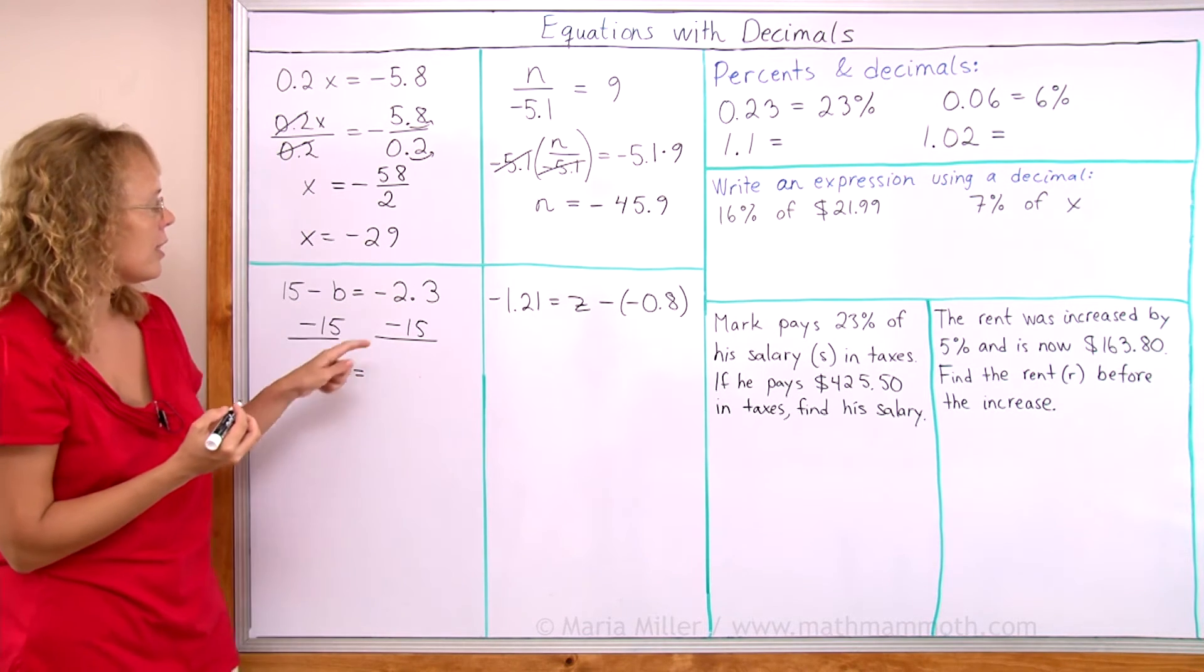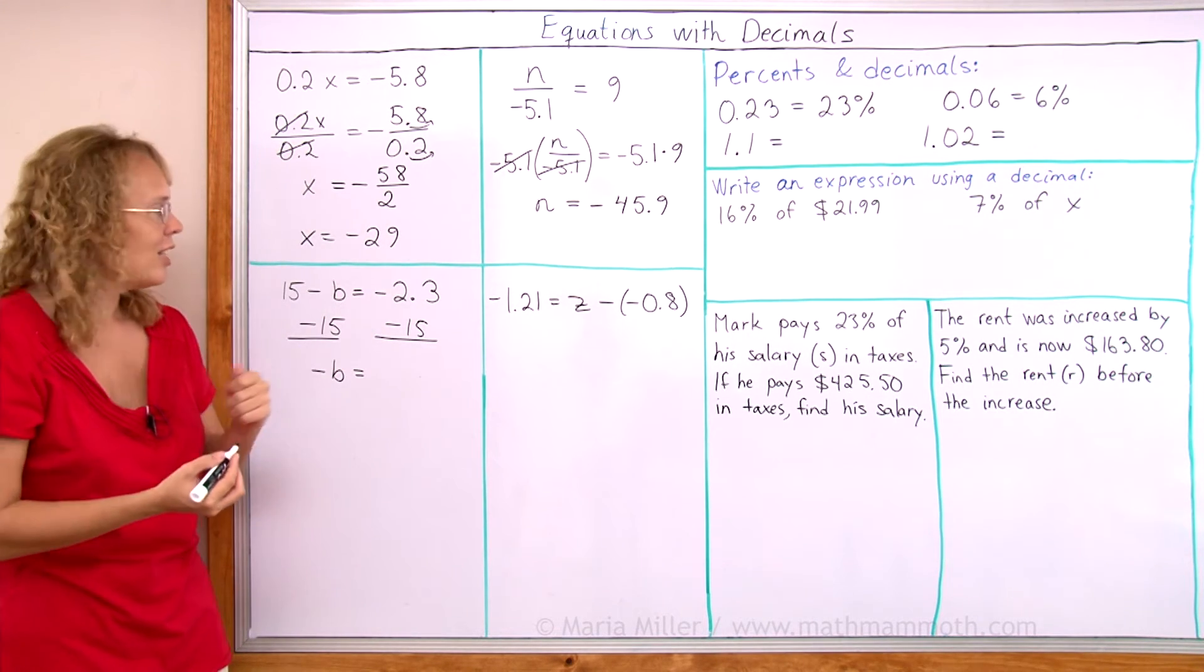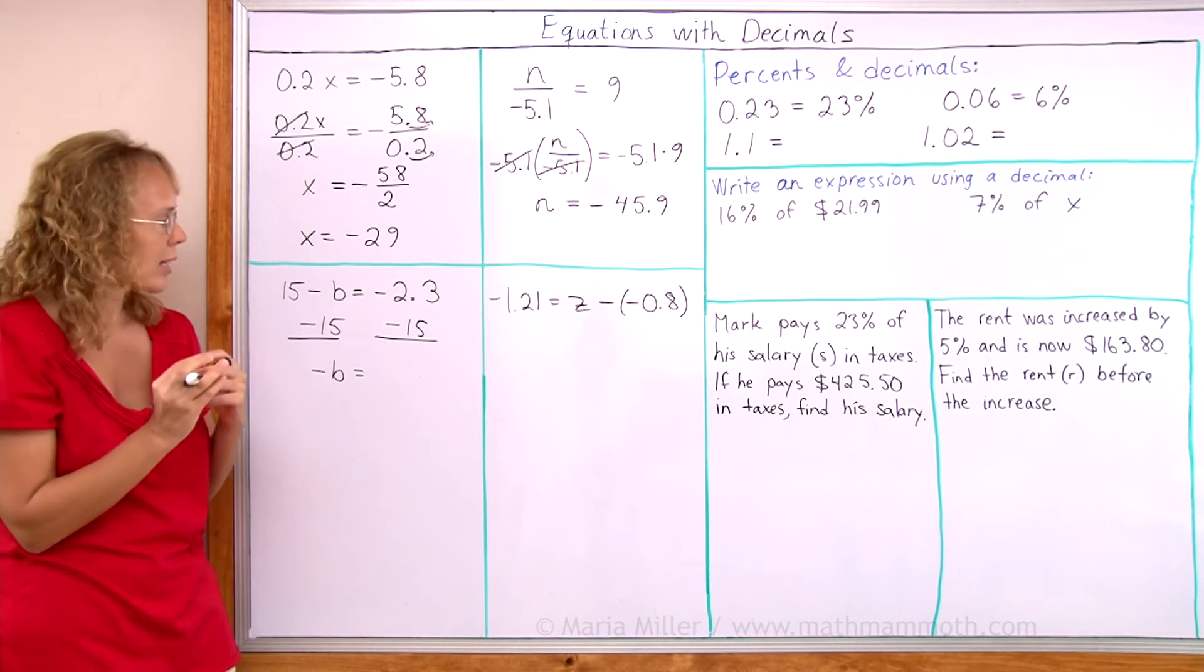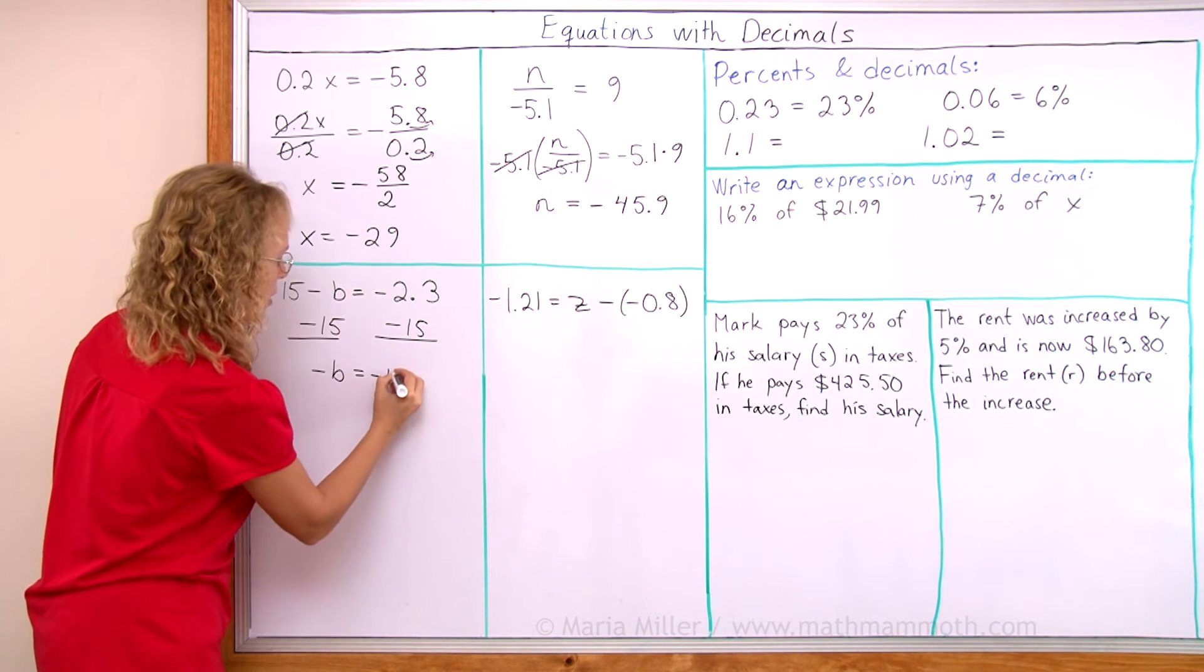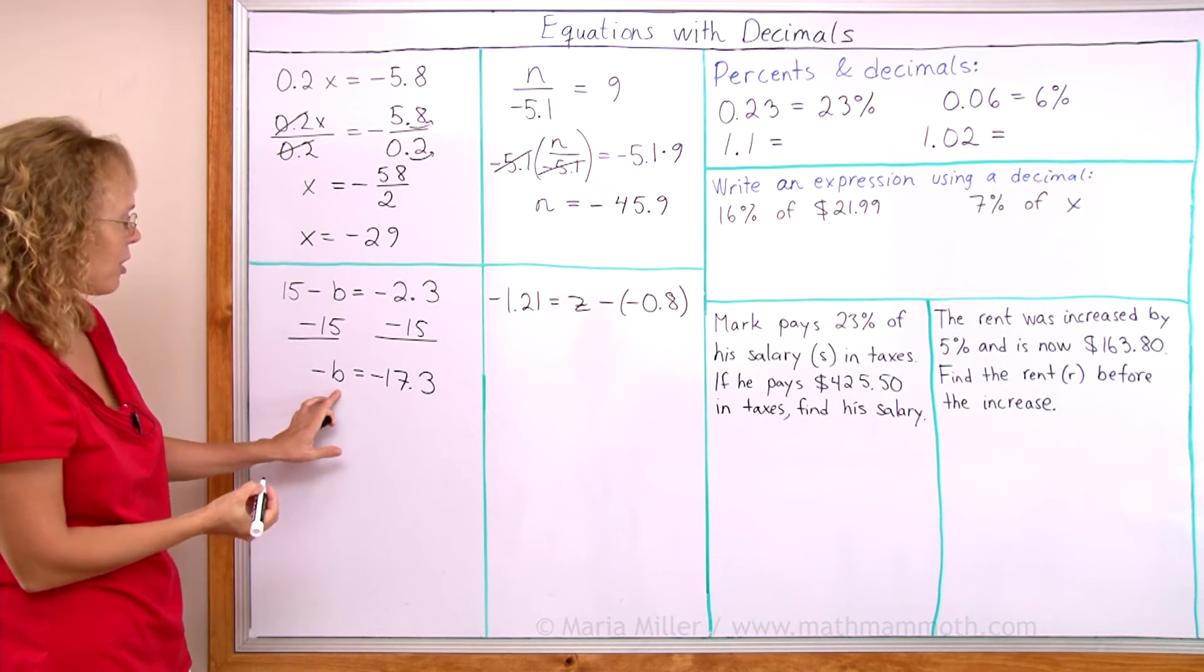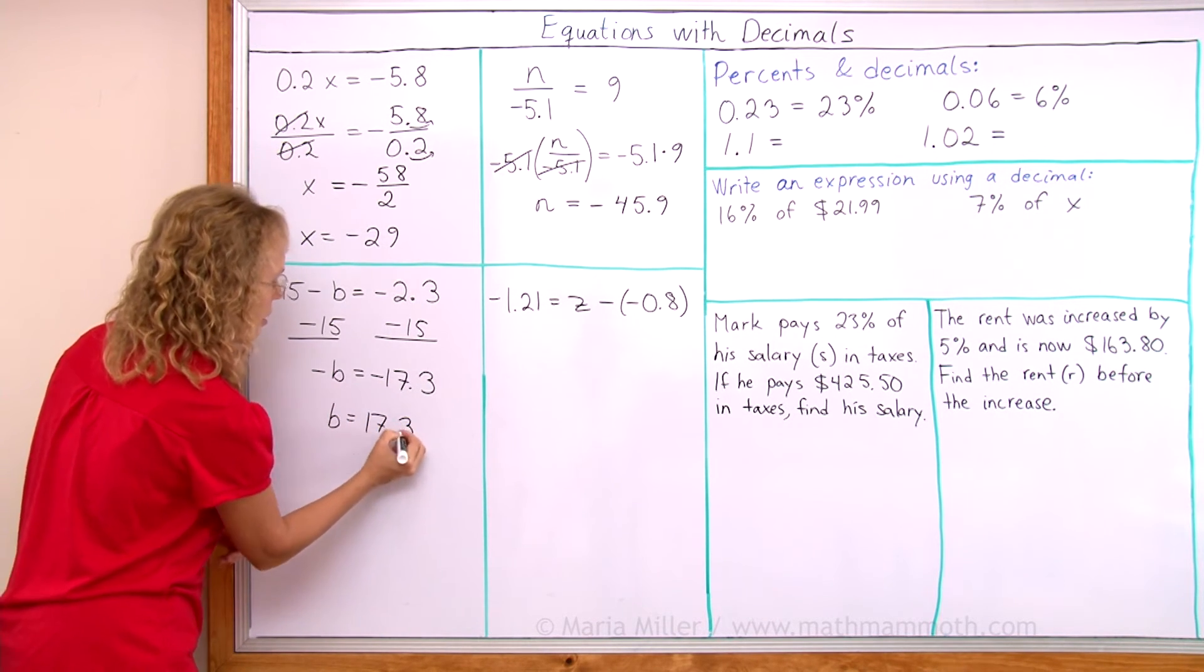On this side I have negative 15 and then negative 2.3. Lots of negatives. So I add the absolute values. I add 15 and 2.3. That's 17.3 but the whole thing is negative. So I get negative 17.3. And of course if opposite of b equals this negative number then b must equal 17.3.